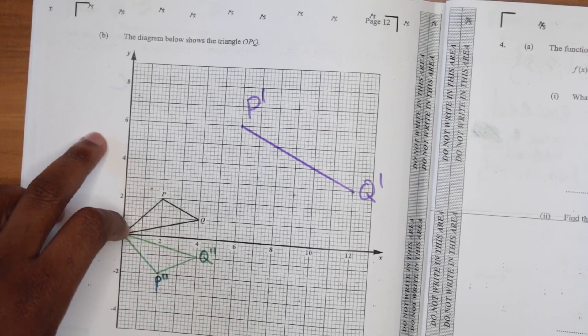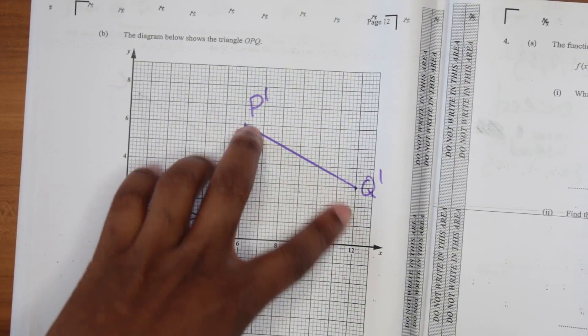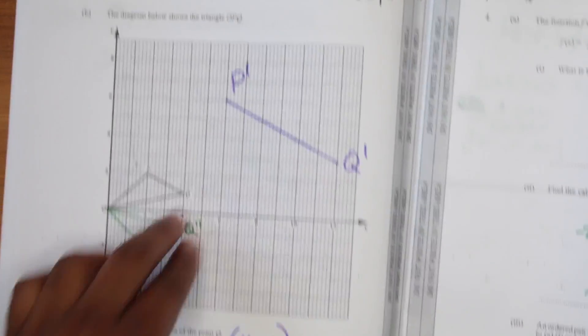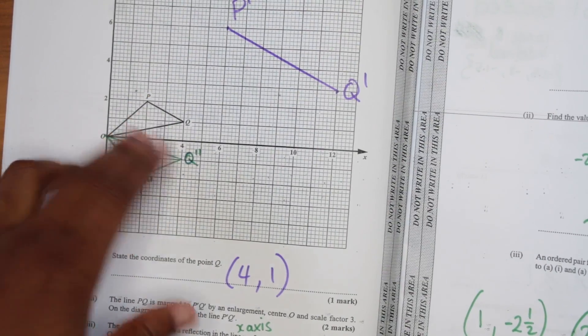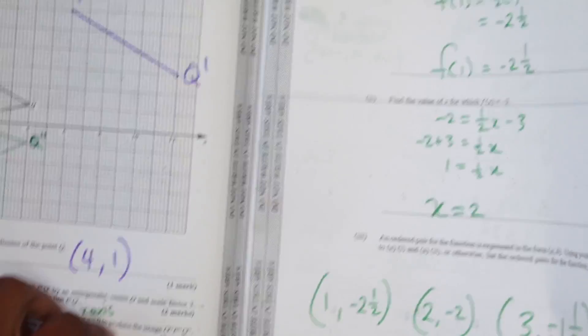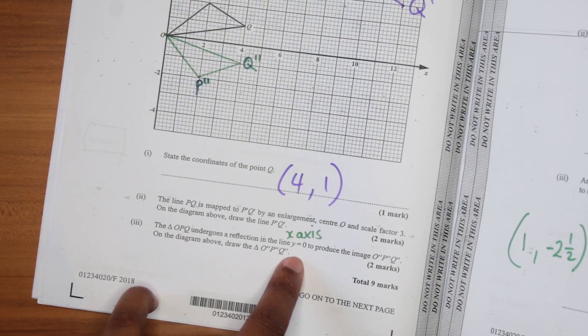In the next part in question three, you had to do a little enlargement of the line PQ. And then you had to do a reflection. They asked you for a point here as well. Easy stuff there. The trick was knowing that the line Y equals zero is really the X axis.